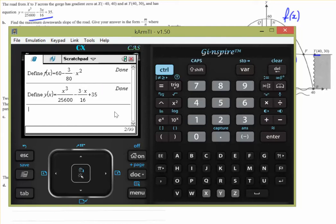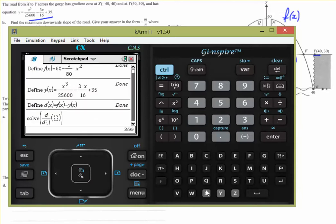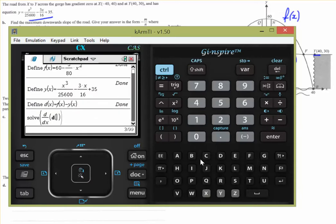Right, now we need to get that distance function, which was the difference between the two. So let's define that. So that function is d of x equals f of x minus y of x. And we need to solve for when that derivative equals 0 to find the maximum. So we're going to solve for when the derivative of d of x equals 0. Now that's going to give us an x value.